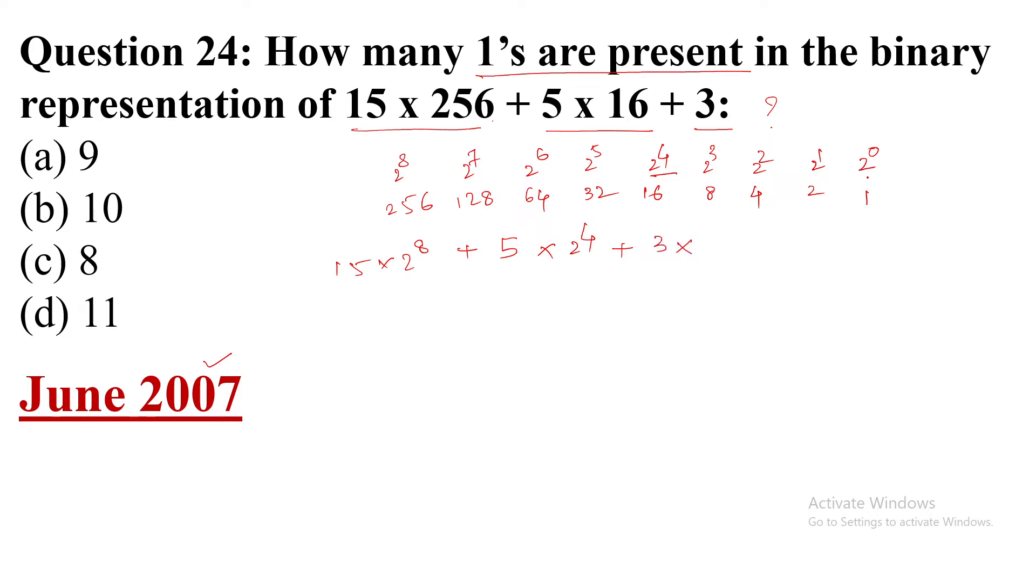Now this 15, how will we write it in powers of 2? 8 + 4 = 12, plus 2 = 14, plus 1 = 15. So 15 = 8 + 4 + 2 + 1. This gives us (8 + 4 + 2 + 1) × 2^8 plus (4 + 1) × 2^4 plus (2 + 1) × 2^0.